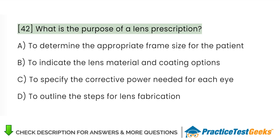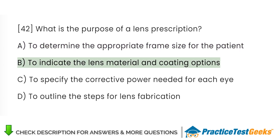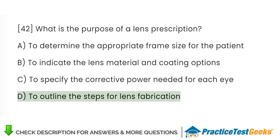What is the purpose of a lens prescription? A. To determine the appropriate frame size for the patient. B. To indicate the lens material and coating options. C. To specify the corrective power needed for each eye. D. To outline the steps for lens fabrication.